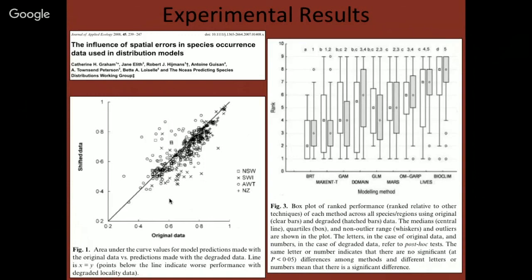On the right side of this slide, notice the relative ranking of different modeling methods between original data and degraded or error-prone data. Domain actually increased its rank, but general linear models and Maxent reduced in their ranking between original and error-introduced data. The only reason I show you that panel is that it makes a difference — it makes a real difference in how these models perform.